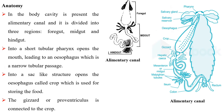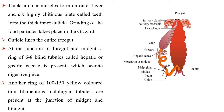Anatomy: In the body cavity is present the alimentary canal and it is divided into three regions: foregut, midgut and hindgut. Into the short tubular pharynx opens the mouth, leading to an esophagus which is a narrow tubular passage. The esophagus opens into a sac-like structure called the crop, which is used for storing food. The gizzard or proventriculus is connected to the crop. Thick circular muscles form an outer layer and six highly chitinous plate-like teeth form the thick inner cuticle. Grinding of food particles takes place in the gizzard. Cuticle lines the entire foregut.